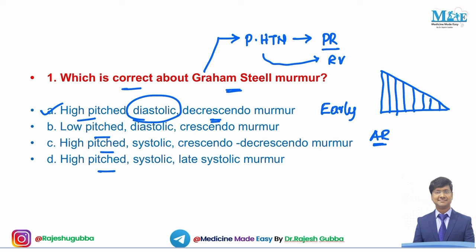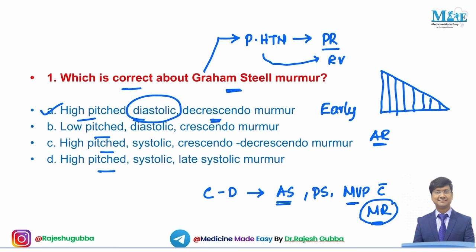Decrescendo murmur is also seen in aortic regurgitation. Crescendo-decrescendo murmur is seen in aortic stenosis, pulmonary stenosis, and MVP with mitral regurgitation. In pure mitral regurgitation the murmur is plateau-shaped, but in MVP with MR it becomes crescendo-decrescendo. So the answer is the first option: high-pitched diastolic decrescendo murmur.